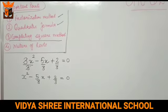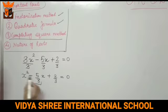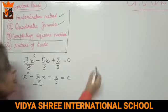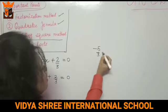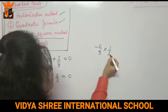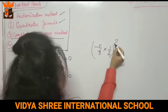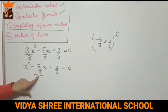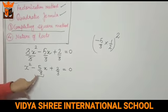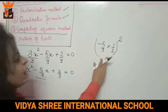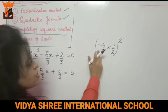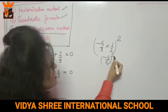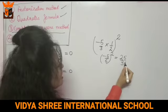The second step is to look at the coefficient of x. The coefficient of x is minus 5 by 3. We multiply the coefficient of x by 1 by 2 and then square it. So we get minus 5 by 6, and the whole square is 25 by 36.